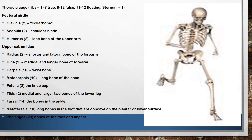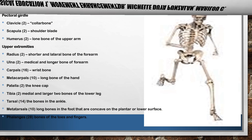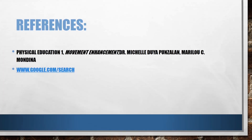Here are the parts of the extremities. For the pectoral girdle, we have clavicle ×2 and scapula ×2. Humerus ×2. For the upper extremities, we have radius ×2, ulna ×2, 16 carpals, 10 metacarpals, 2 patellae (the kneecap), tibia ×2, 14 tarsals (the bones in the ankle), 10 metatarsals (long bones in the foot that are concave to the plantar and lower surface), and 28 phalanges — the bones of the toes and fingers.